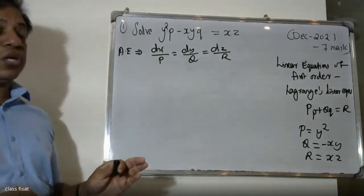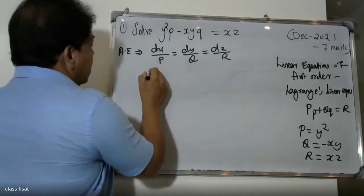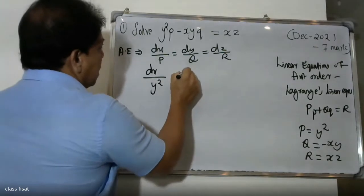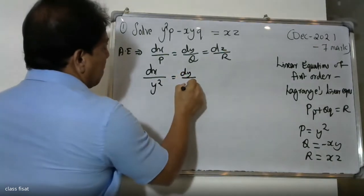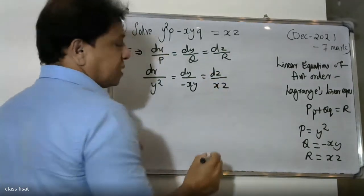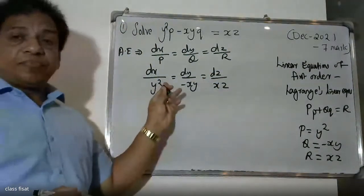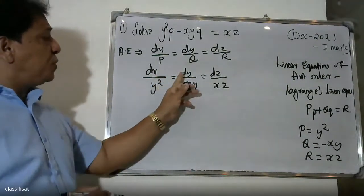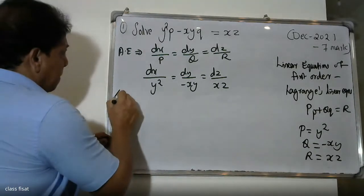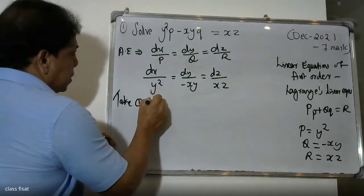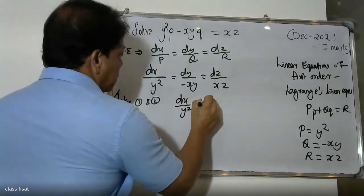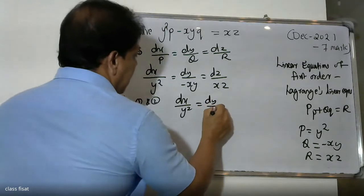First we write the auxiliary equations: dx by P is y², dy by Q is minus xy, dz by R is x. Then for the first ratio and second ratio, we take dx by y² equals dy by minus xy.